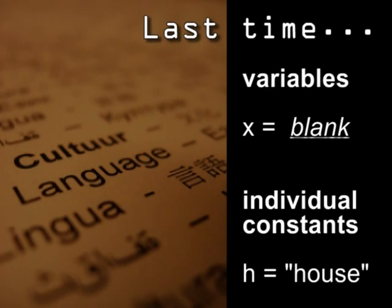The first video in this series presented logic as a language, a formal language that can help us think about human language and individual languages. Now that we've seen why it's useful to have a logic that's a formal system with constant symbols and variable symbols, I want to explore the parts of statements and the constants and variables used to represent those parts of statements in logic.